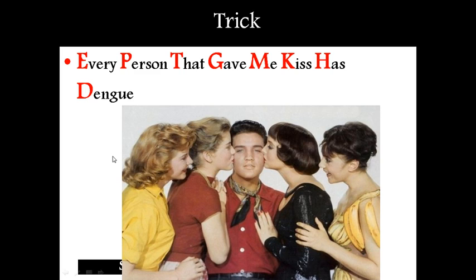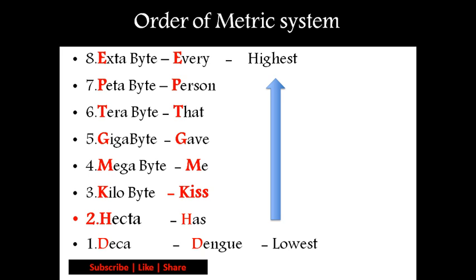Let us see the trick. Here you can see this beautiful trick. The sentence is: 'Every person that gave me kiss has dengue.' This trick is very good — but what is it about? Let us see.